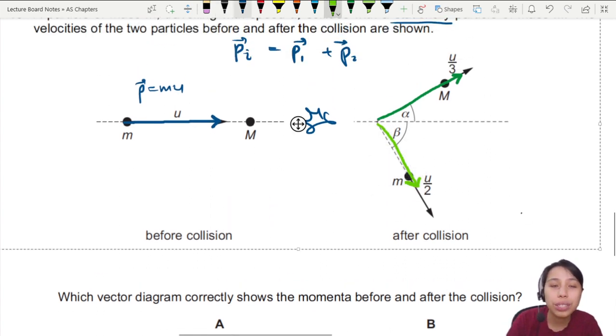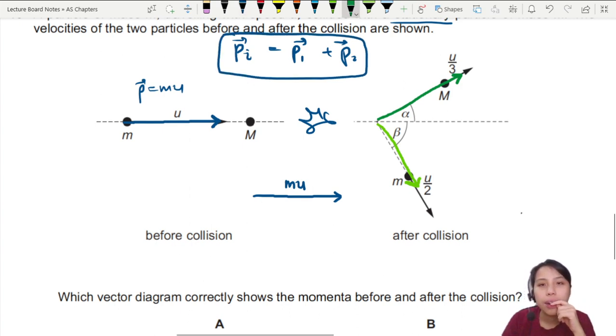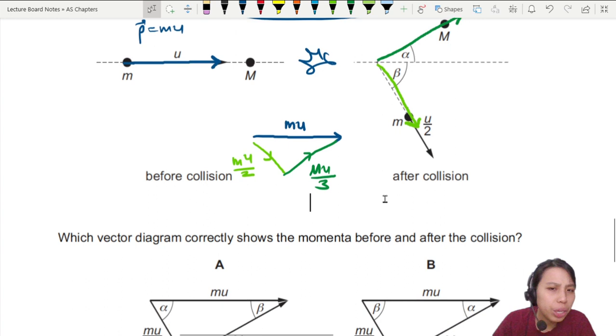So we got an idea that all these arrows are really momentum vectors. Let's try to draw in the way that the question wants. So we have the first horizontal one, this momentum vector will be m times u, that's the initial. The initial equals to the addition of the other two. So let's draw the one that goes down, this will be mu over 2, mass times velocity. Then the last one, this one will be Mu over 3.